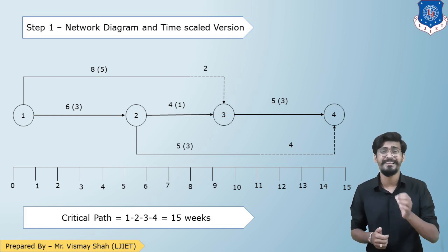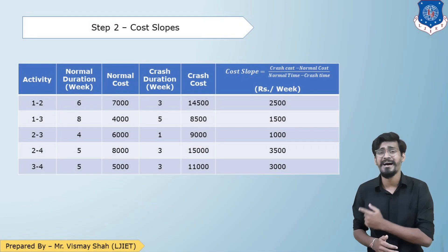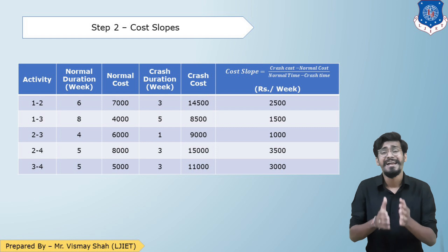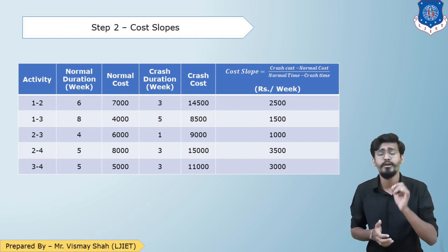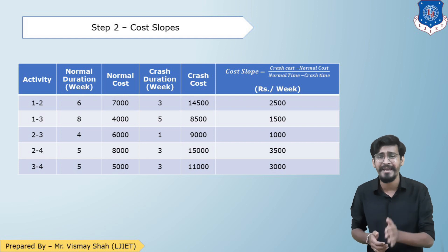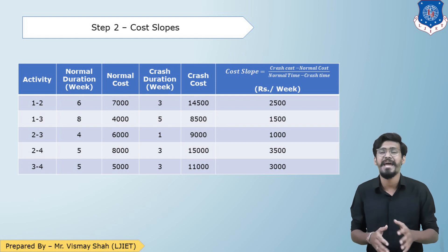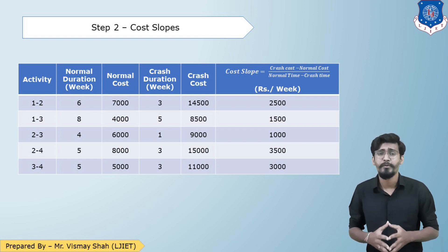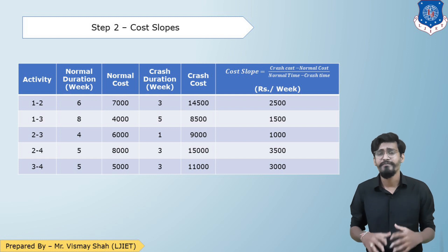Now let us move forward with the second step: the cost slope table. Here I have reproduced the table from the question and added a column for cost slope. Using the formula — crash cost minus normal cost divided by normal time minus crash time — I have calculated the cost slope for each activity. We will finish this numerical in the next session.